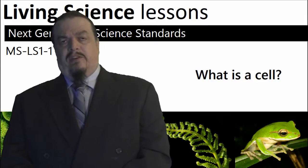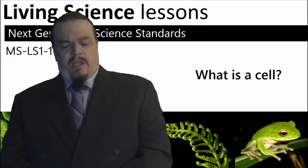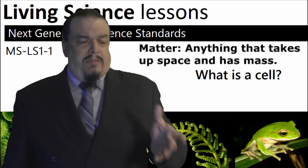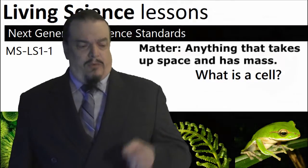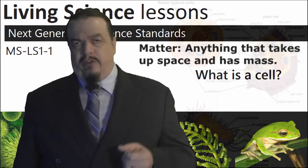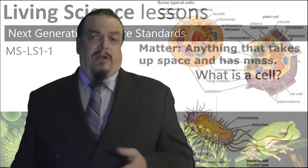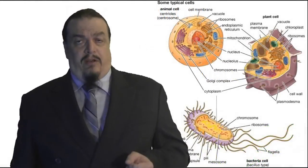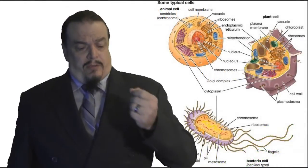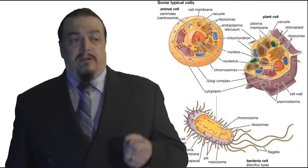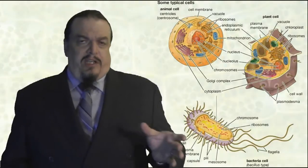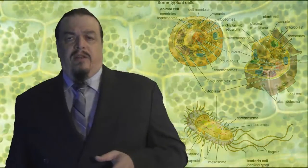Hi, I'm Aron from Living Science Videos. In an earlier video of this series we answered the question about when matter is considered to be alive. One of the characteristics that distinguish living from non-living matter is that all life is composed of cells. They are the most basic form of life, and they are the most basic component of life. We use the analogy that cells are like building blocks.